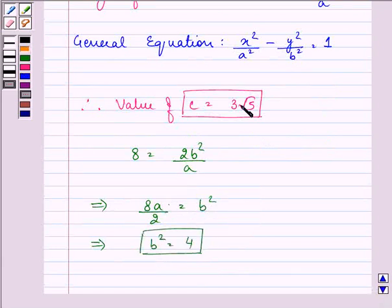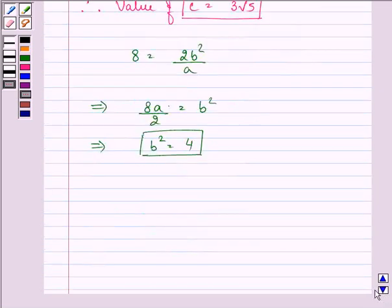Now with the help of the value of c and b we can find out the value of a. We know that b square equals c square minus a square.